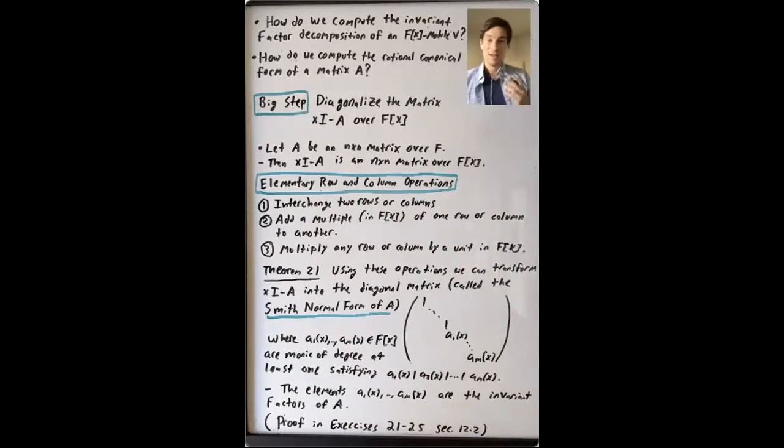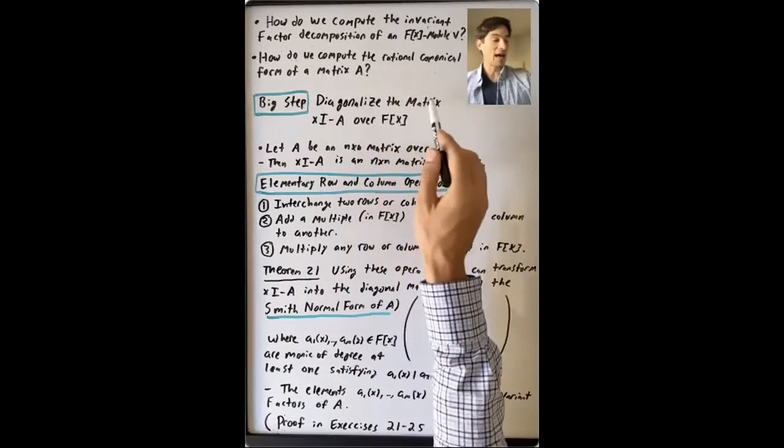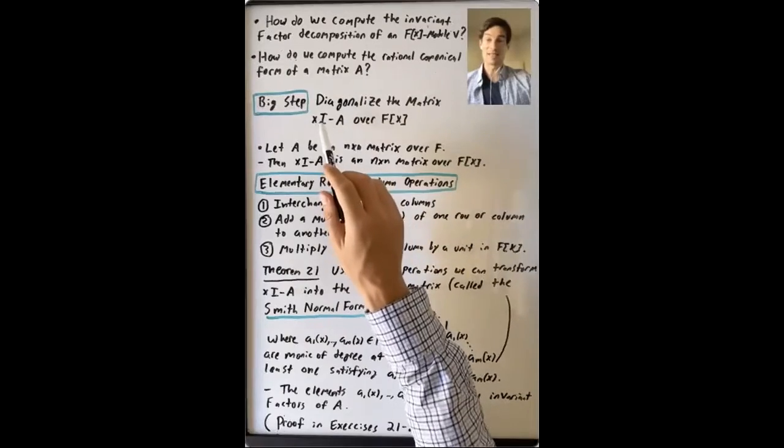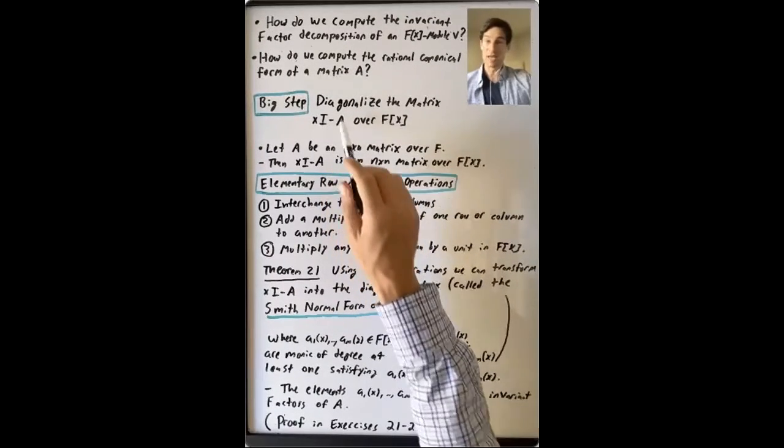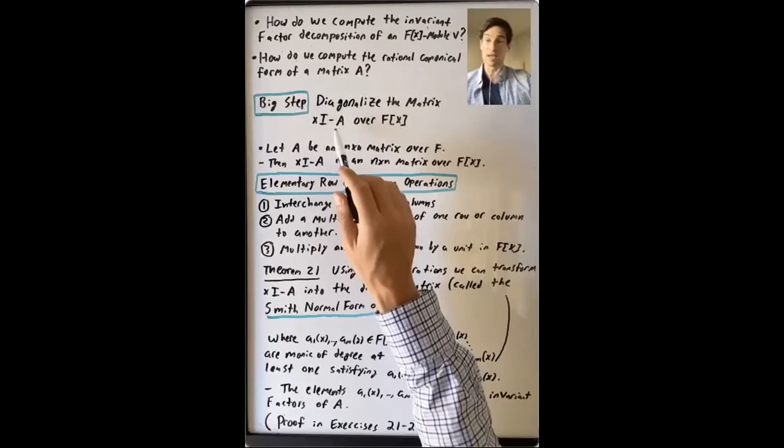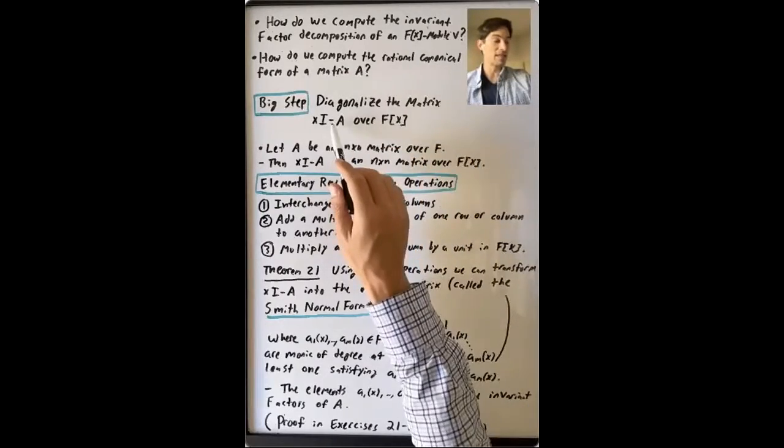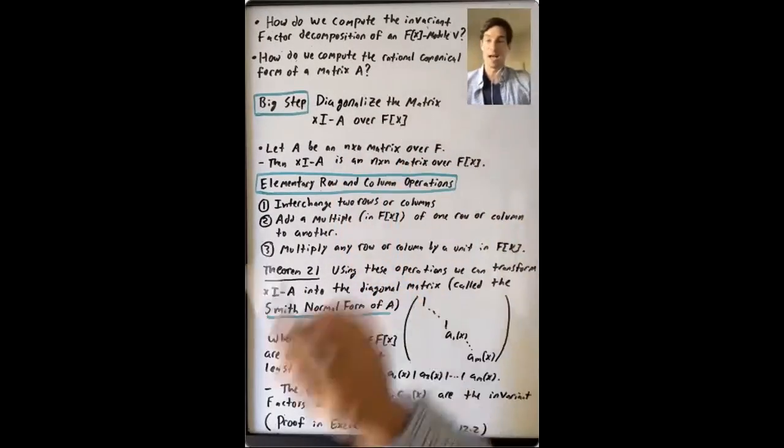And in answering these questions, a big step is going to be that we'll diagonalize the matrix x times I minus A, this matrix whose determinant gives you the characteristic polynomial. We'll diagonalize this matrix over F[x].